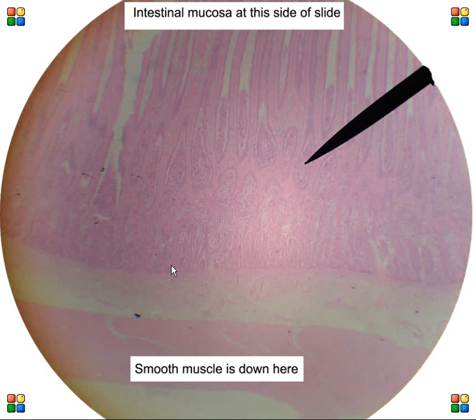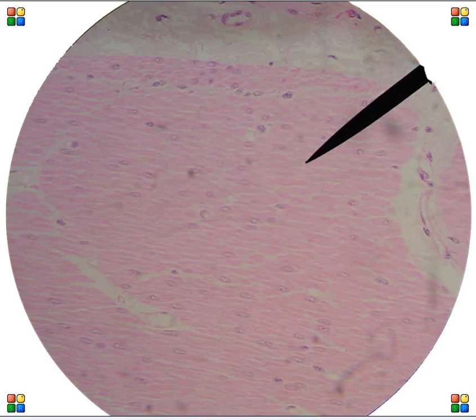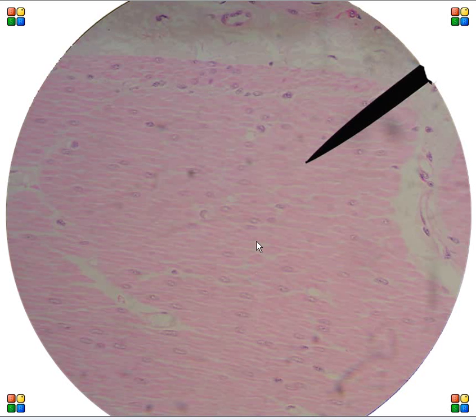This is smooth muscle. This happens to be small intestine. This is the mucosal lining. This is submucosa and then there's the muscularis or the smooth muscle layer. Let's go to high magnification with smooth muscle. And this looks very different.